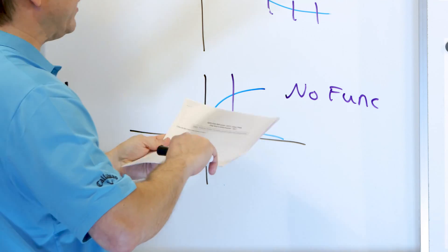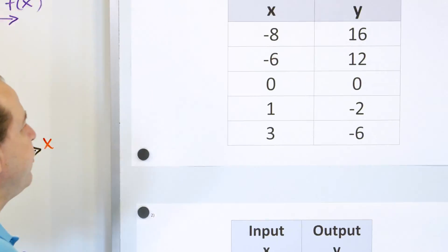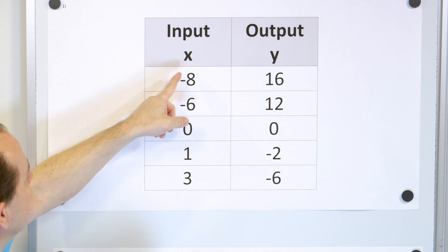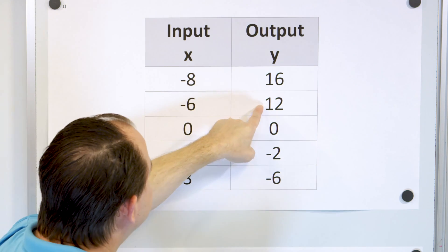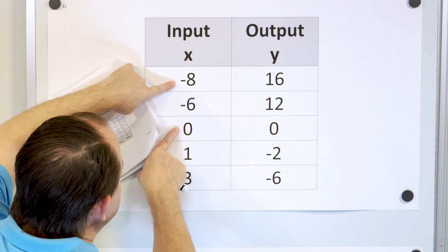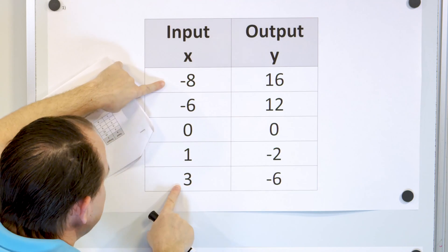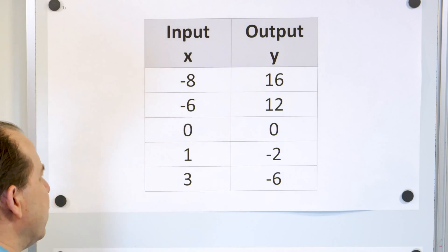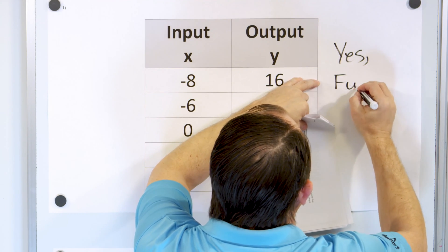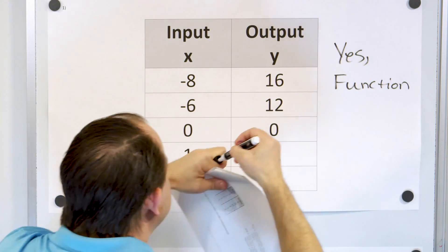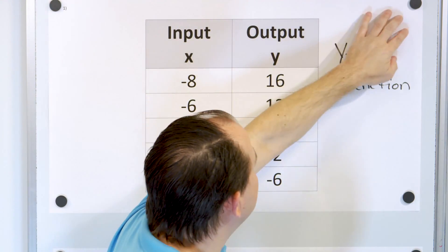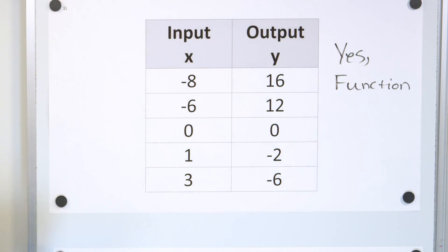Now that we've refreshed our memory on that, let's turn our attention to a situation where we don't have a graph at all — we just have a table. We have an input of negative eight and an output of 16, input of negative six, output of 12, and so on. Does this represent a function or not? All you're really looking for is for every unique input in the table, you only have one output value. So even without graphing it or doing a vertical line test, yes, it is a function, because the definition of a function means for every input you have, you have only one output value.